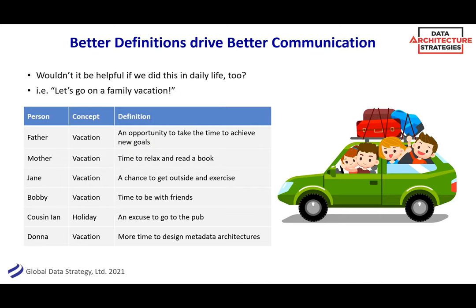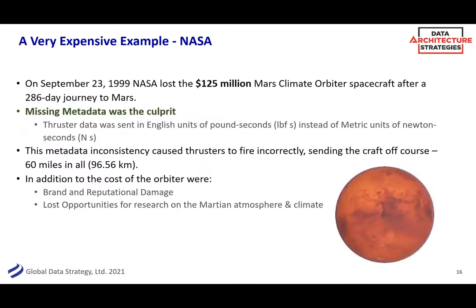Communication is always helpful. NASA, in 1999, actually lost a $125 million Mars orbiter because of a metadata issue. When they set the figures, the data was in English pound-seconds instead of metric units (Newton-seconds). If you don't know what the unit of something is, you can get much off course. The cost at minimum was $125 million — talking about ROI, that's a big hole. But think of the brand and reputation damage, and more importantly, think of all the lost opportunities for research on that Mars Climate Orbiter. Things like that happen in organizations too.